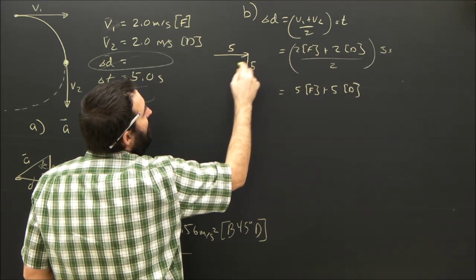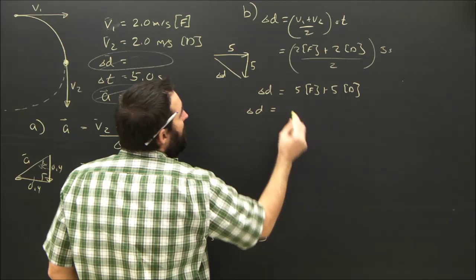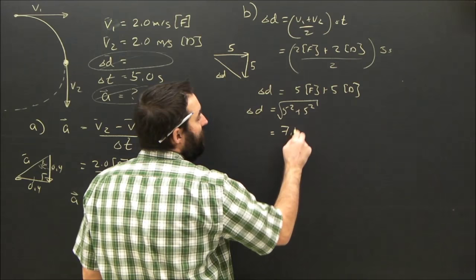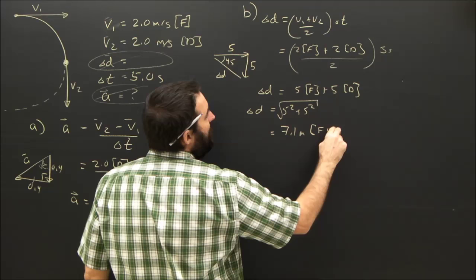Well, just like before, except a little bit different. 5 forward, 5 down. Then we would expect the displacement to be equal to 5 squared plus 5 squared, square rooted, which we would get 7.1. 7.1 meters. And again, the direction is going to be 45 degrees. Forward 45 degrees down.